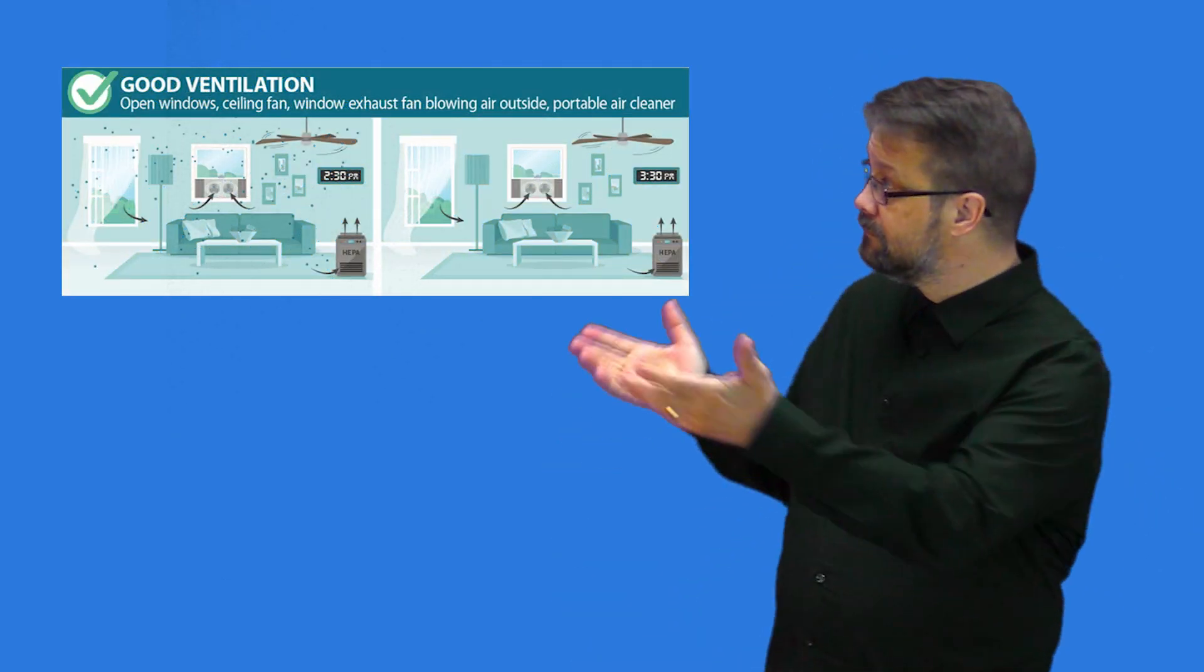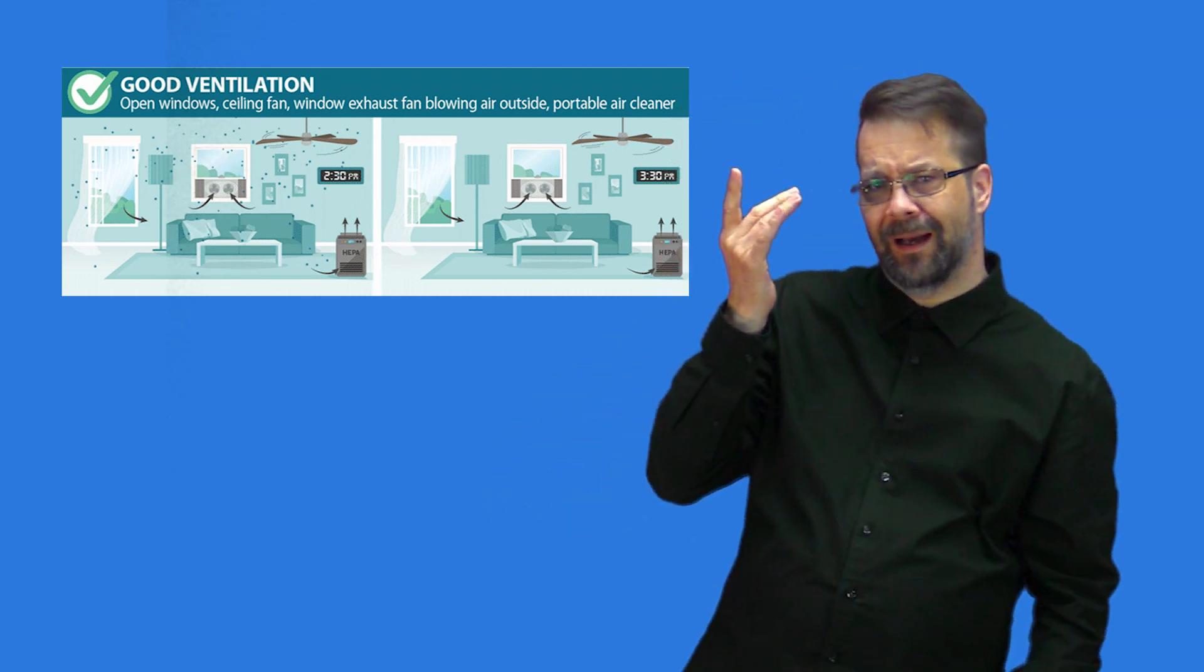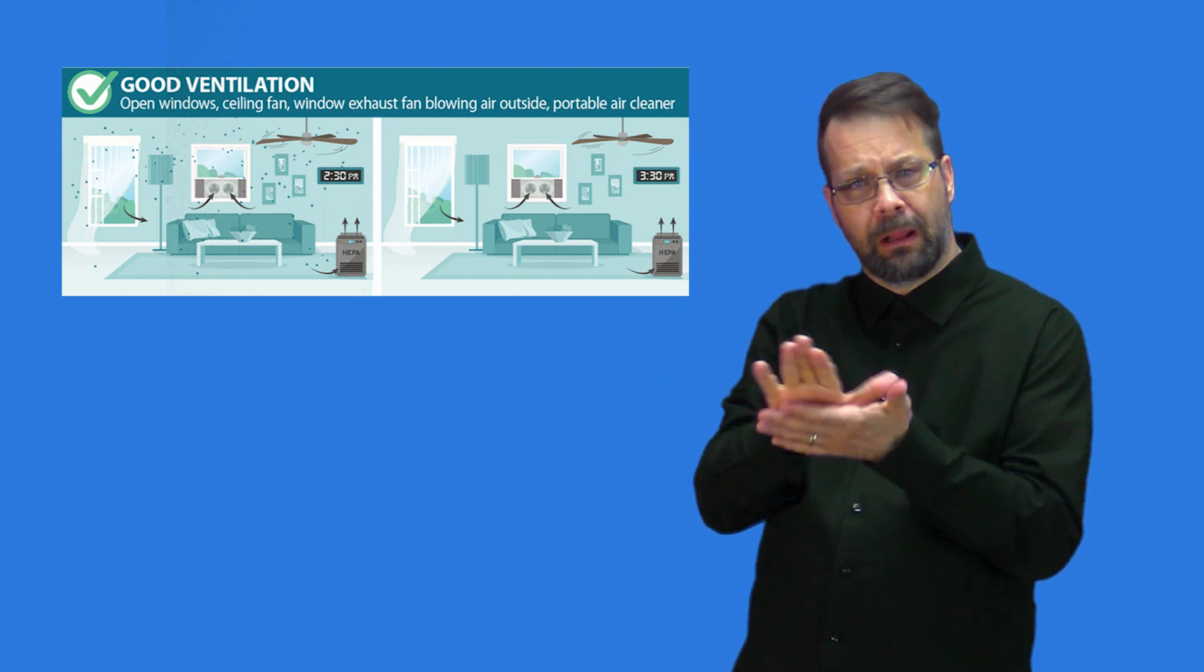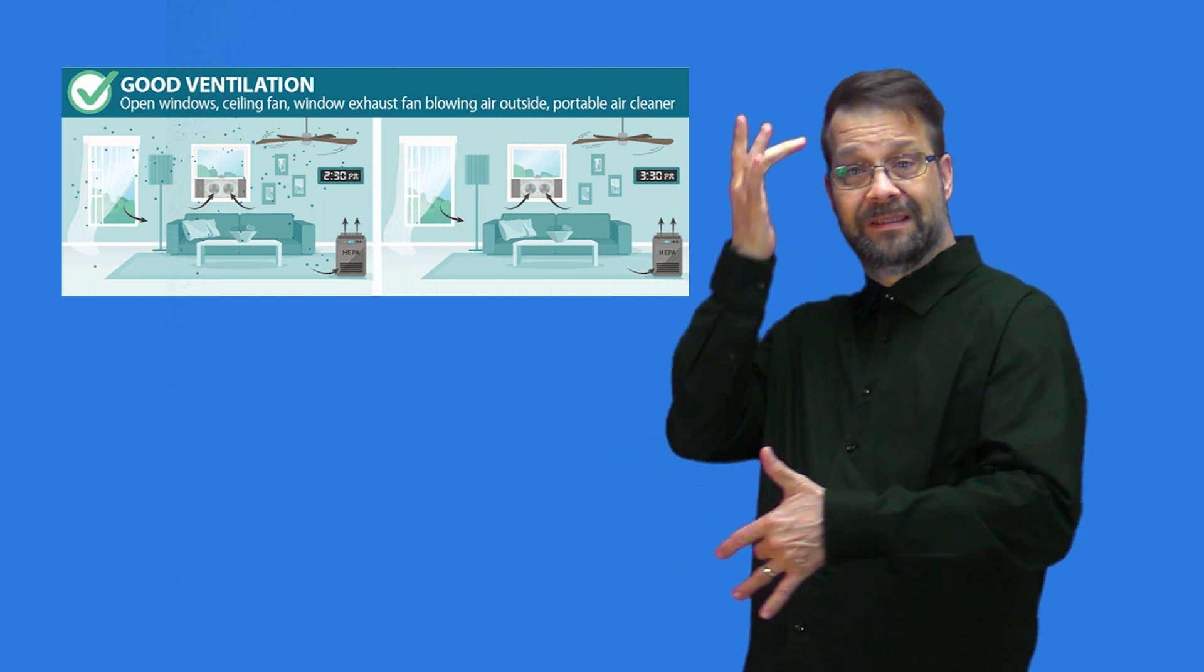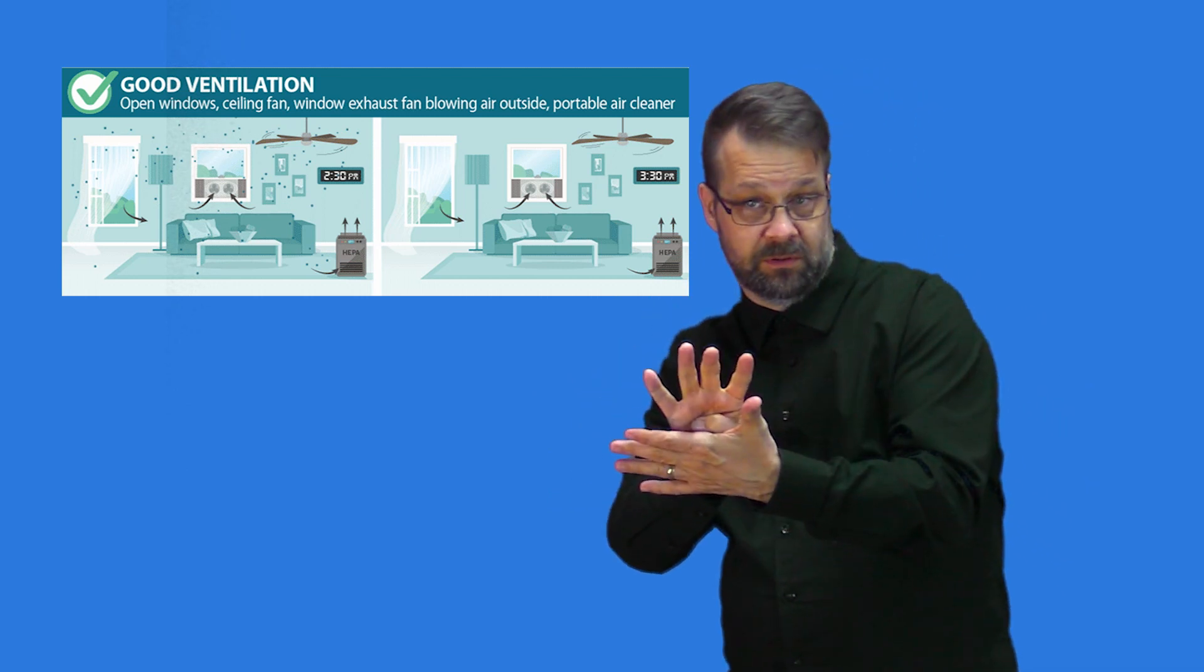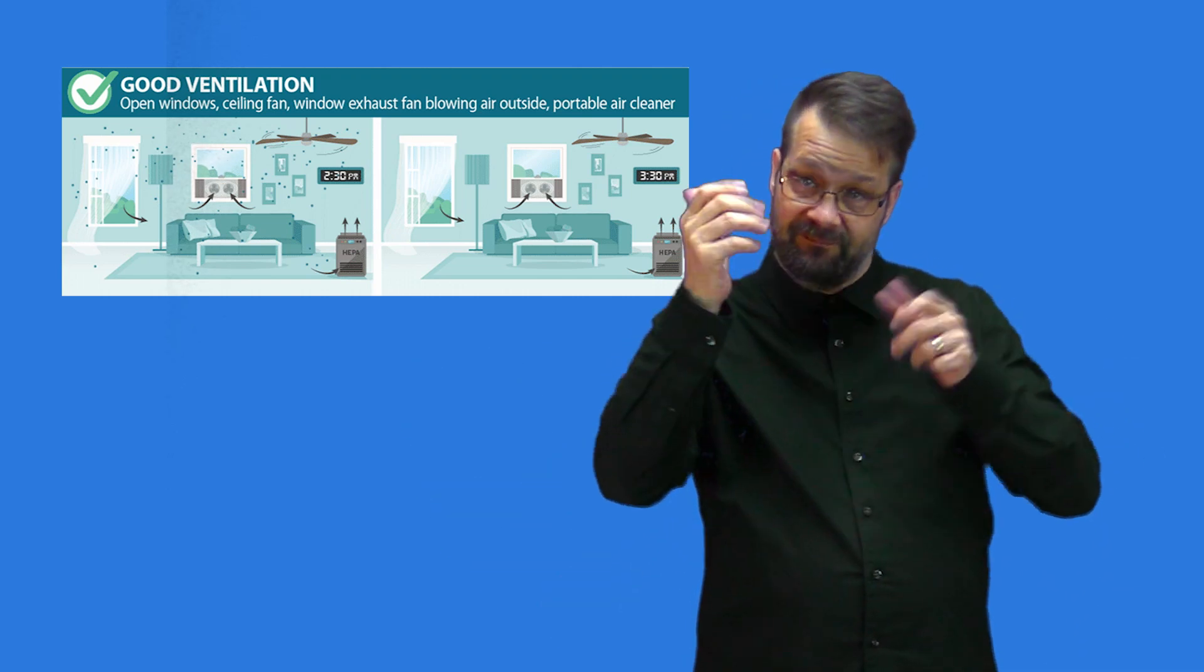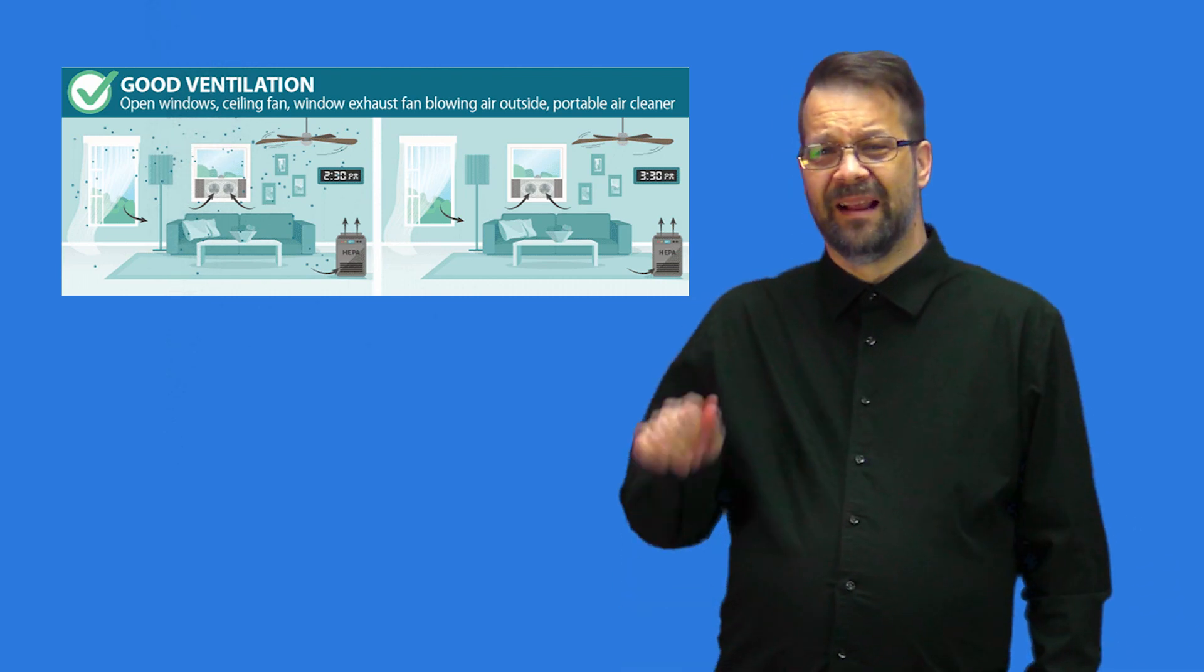Now this picture shows a room with good ventilation. It has open windows, a ceiling fan, a window exhaust fan blowing air outside, and a portable air cleaner. The picture on the left shows how many virus particles would be in the air after a four-hour visit by an infected person. And the picture on the right shows fewer virus particles remaining in the air one hour later with good ventilation.